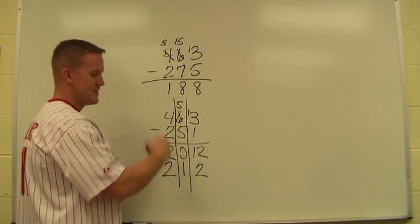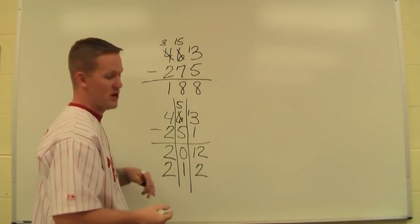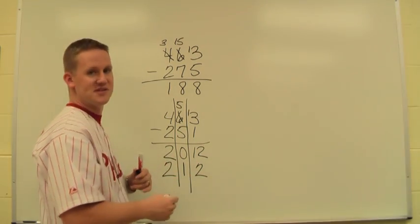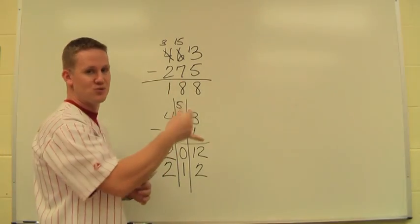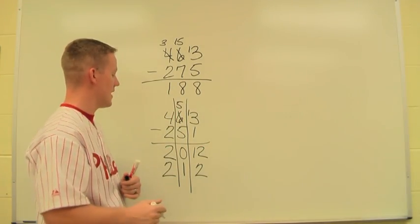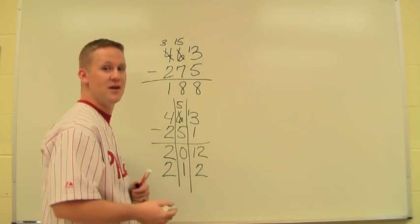So basically, I was still able to get the problem right, even though I might have traded wrong. As opposed to the standard method, where you do your trades and subtract, you can't really catch that mistake at the end. So this is the trade-first method for subtraction.